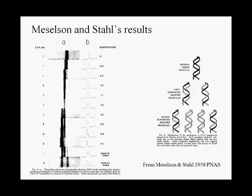This is the actual data that they published in their paper. You can see generation zero, after one generation, about two generations — it's 1.9, close enough to two — then three generations and four generations, as in the previous figure.